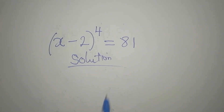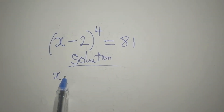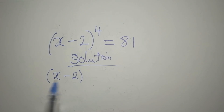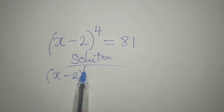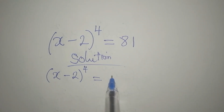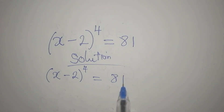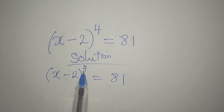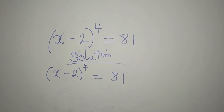Hello everyone, let's provide the solution to this problem very quickly. We have x minus 2 to the power of 4 equals 81.